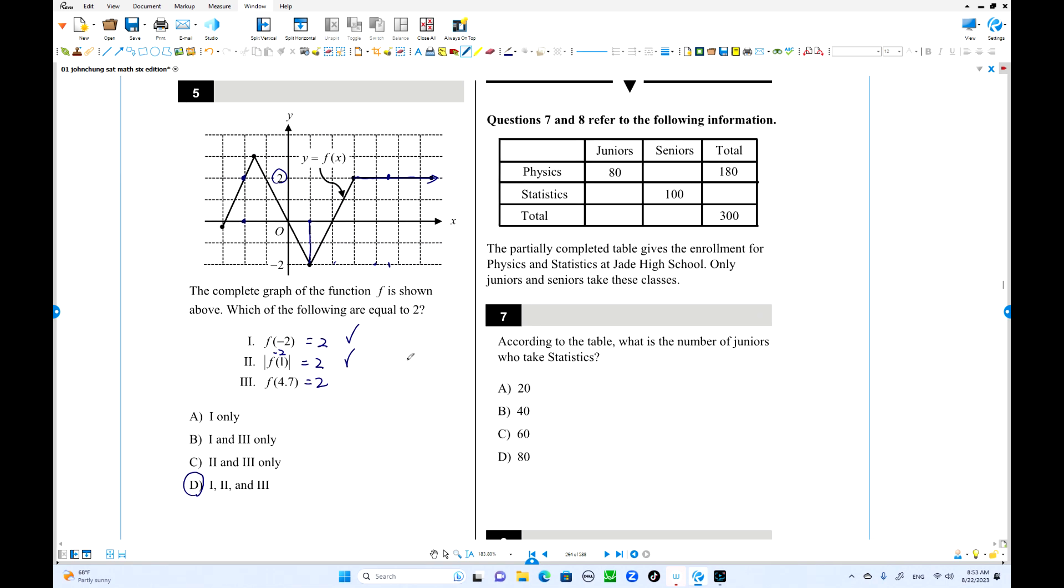Number 7. We have a frequency table. Junior, senior, and the other ways of physics and statistics. You can read over here. So according to the table, what is the number of juniors who take statistics? Figure out this is about 300, 180. This will be 120. This is 20. Yeah, that is 20 is the answer.